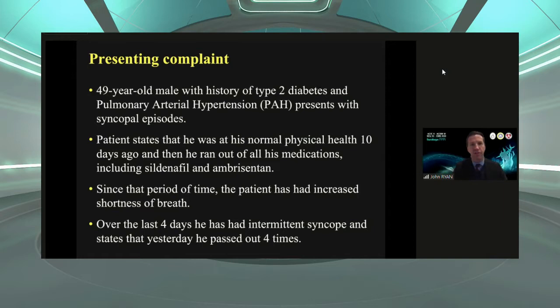We have a 49-year-old gentleman with a history of type 2 diabetes and pulmonary arterial hypertension who came in with syncopal episodes — he was passing out. He said he was in normal physical health up until a few days ago, then he ran out of his medicines: sildenafil and ambrisentan. Since that time, he's had increasing shortness of breath, and over the last four days, intermittent syncope — he passed out four times the day before.